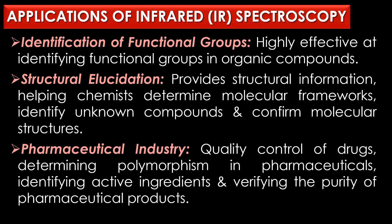Applications of infrared spectroscopy: First, identification of functional groups — IR spectroscopy is highly effective at identifying functional groups in organic compounds, as each functional group has a characteristic absorption range. Second, structural elucidation — IR spectroscopy provides structural information helping chemists determine molecular frameworks, identify unknown compounds, and confirm molecular structures. Third, in the pharmaceutical industry, IR spectroscopy is used for quality control of drugs, determining polymorphism, identifying active ingredients, and verifying purity.